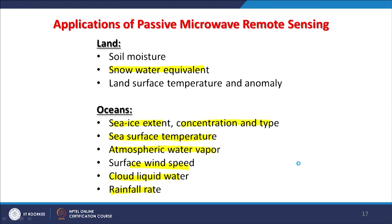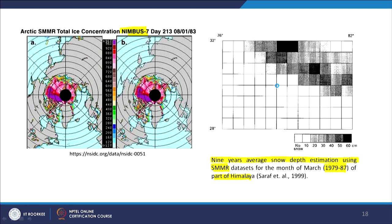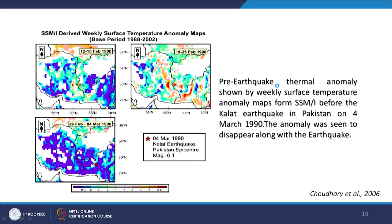Passive microwave can also be used for land surface temperature and anomaly studies. Using SSMI-derived weekly surface temperature anomaly maps available between 1988 to 2000, weekly average anomaly maps were computed compared against the base period of 1988 to 2002. If you pull out a weekly data value compared to the average, you get the anomaly.